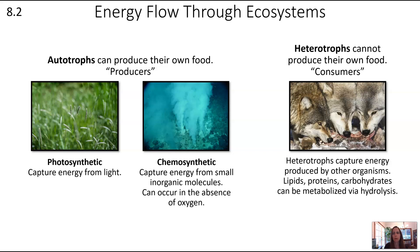Heterotrophs cannot produce their own food — these are consumers. Animals, for example, are heterotrophs. Heterotrophs capture energy produced by other organisms; lipids, proteins, and carbohydrates can all be metabolized via hydrolysis. For more on that, refer back to the first unit on biochemistry and the unit on energy.